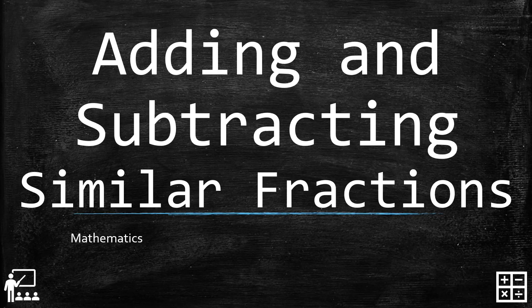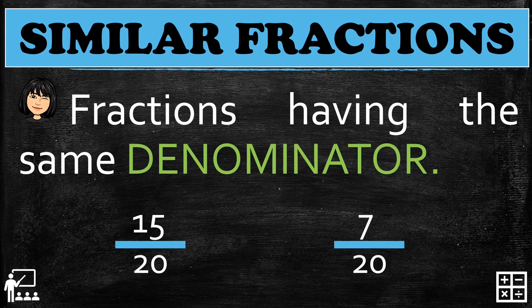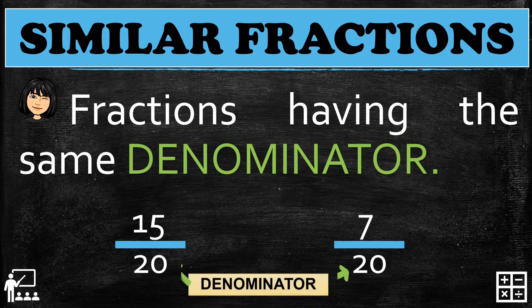This video lesson is about adding and subtracting similar fractions. Similar fractions are fractions having the same denominator. For example, 15 over 20 and 7 over 20 are similar fractions because they have the same denominator, which is 20.